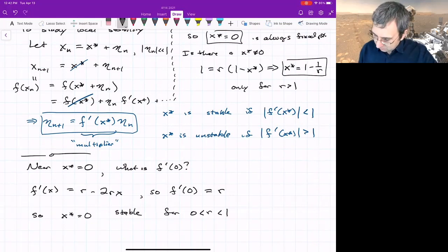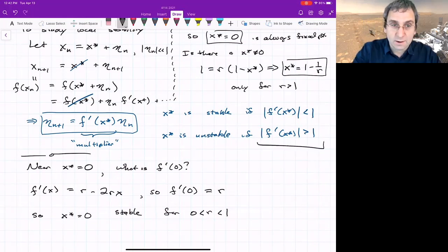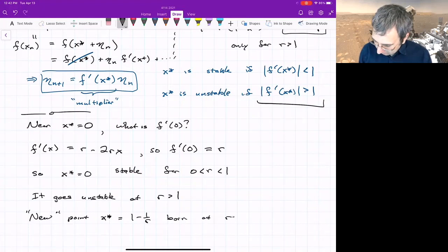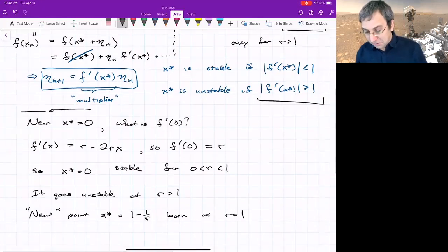That means the origin is stable for r less than 1. r has to be positive. In general, we're only allowing it to go between 0 and 4. So that point's stable for r less than 1, but it goes unstable at r greater than 1. And that new point x* = 1 - 1/r is born at r=1.